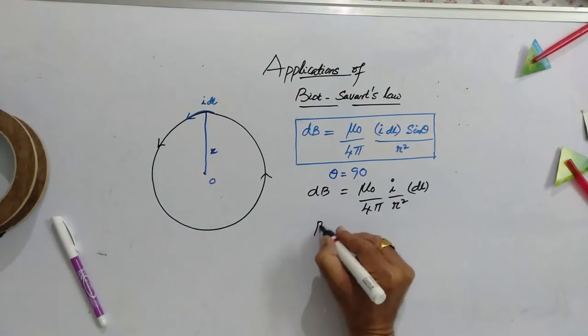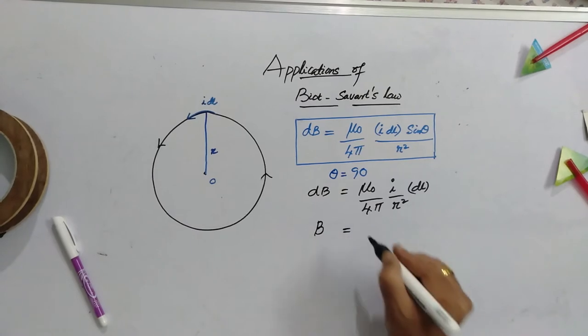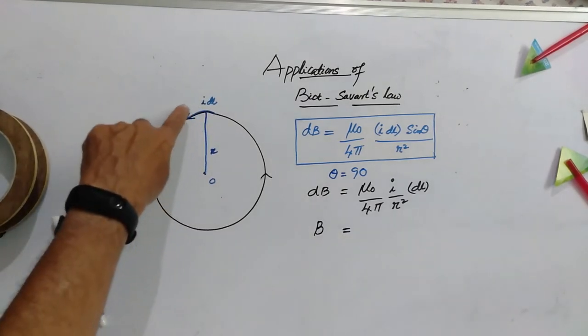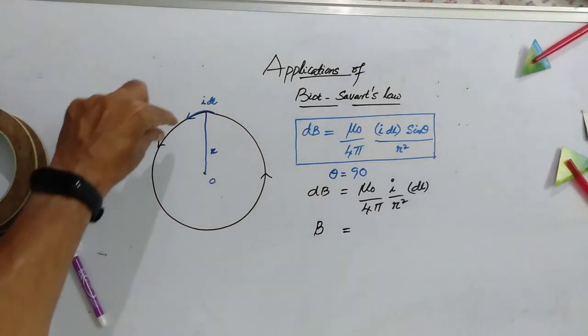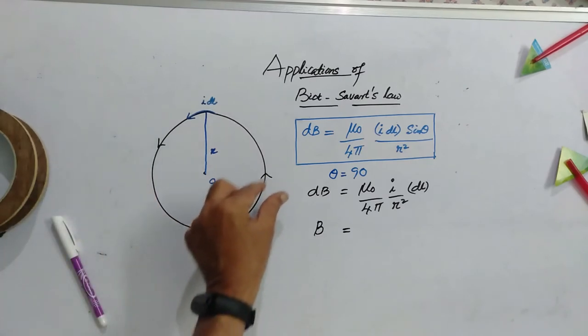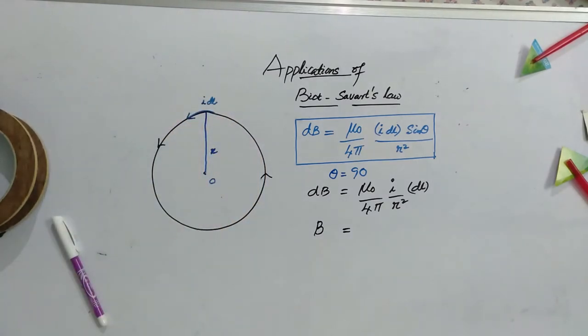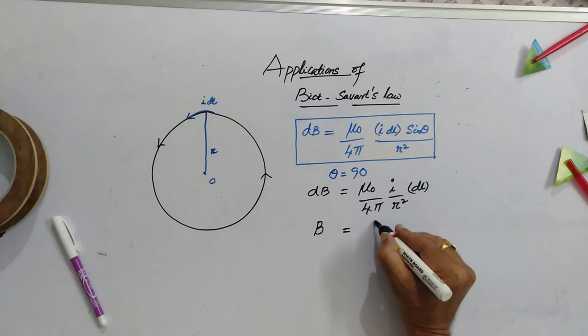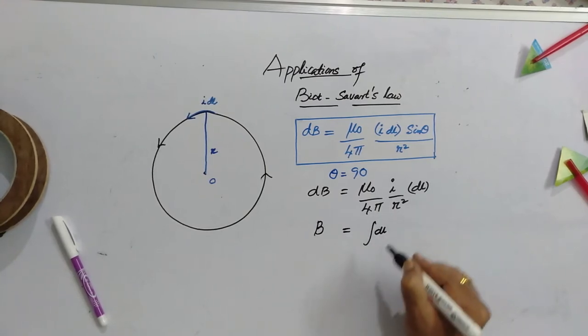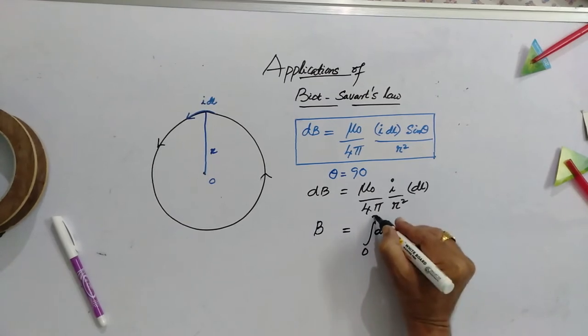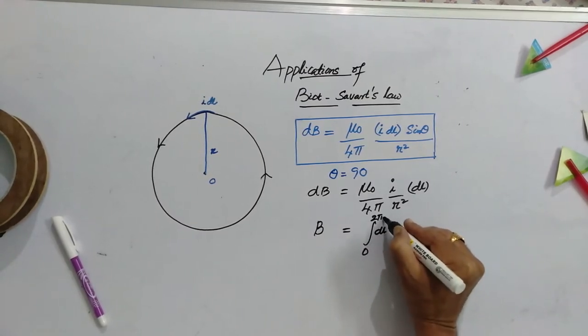If you want to calculate B, you have to take the contribution of all such small elements placed all over the circle. That means, you have to take the integration of DL from 0 to 2 pi r.